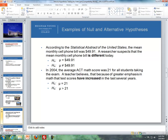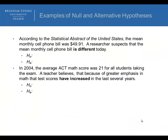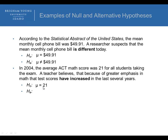Now try the practice examples. For the first: the null hypothesis is mu equals $49.91, and since researchers think it's different, the alternative is mu is not equal to $49.91. For the second example, the average ACT math score is 21. Because the teacher believes scores have increased due to greater emphasis on math, the null is mu equals 21, and the alternative is mu is greater than 21.